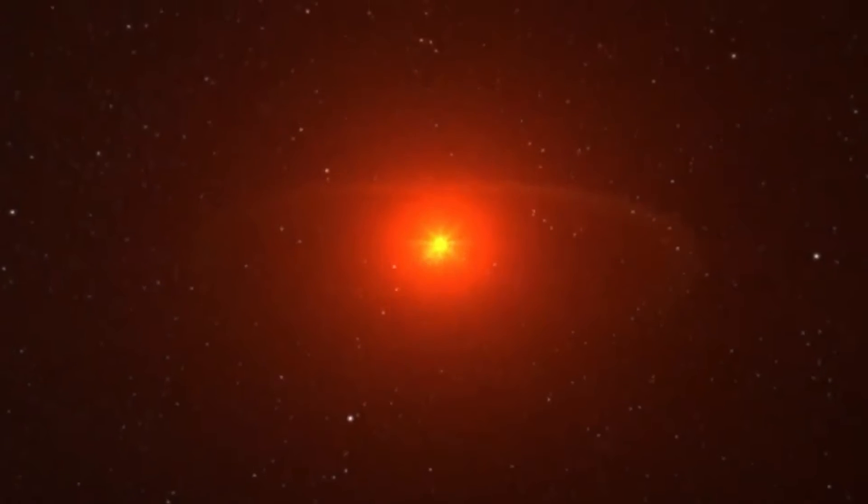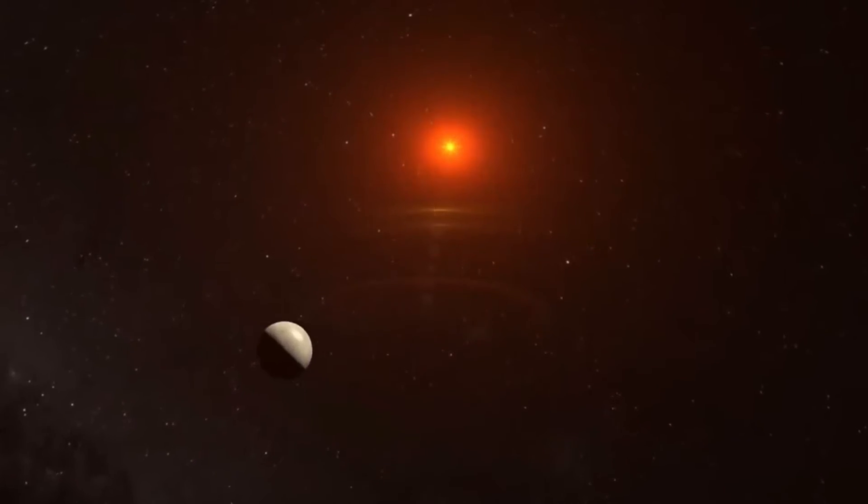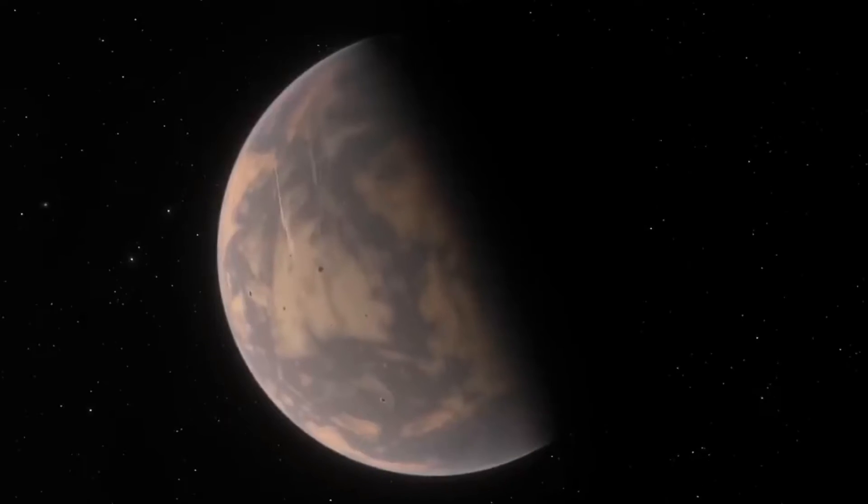Scientists are particularly interested in Proxima b because of its potential to support life. It is in the habitable zone of its host star, Proxima Centauri, which means that it is at the right distance from the star to potentially have water on its surface.